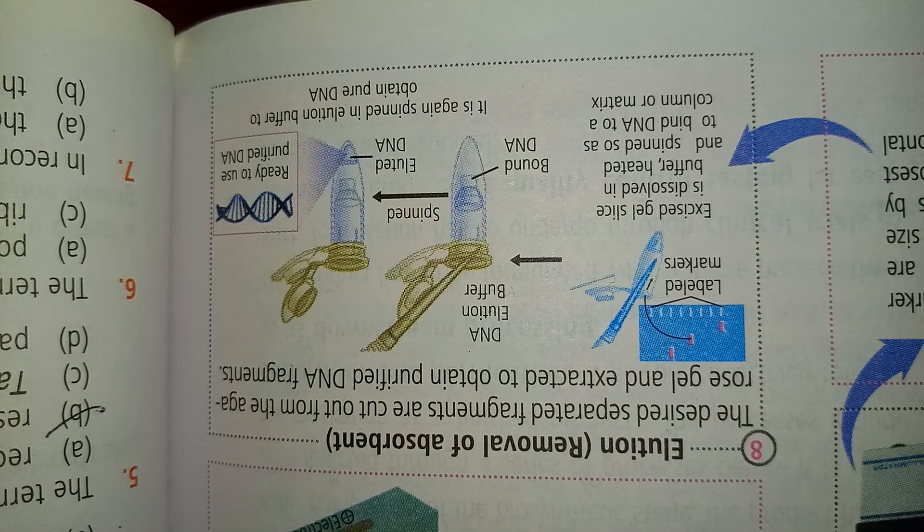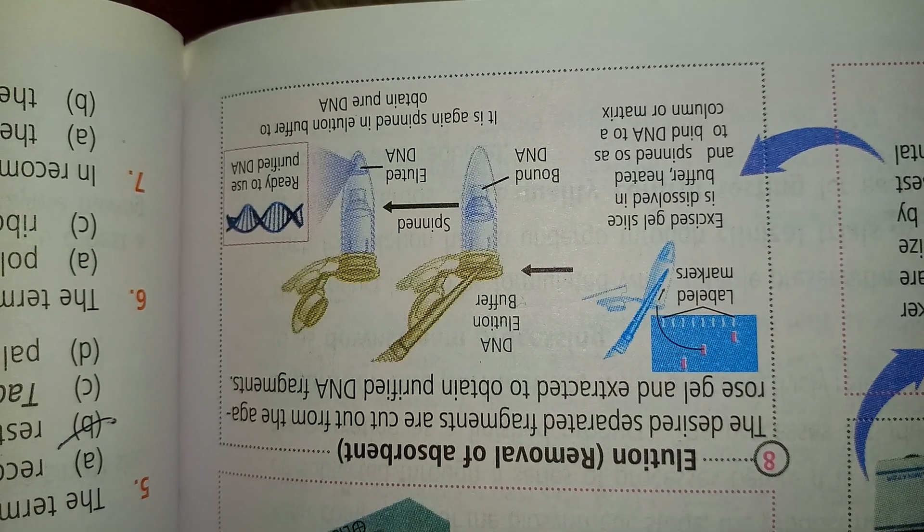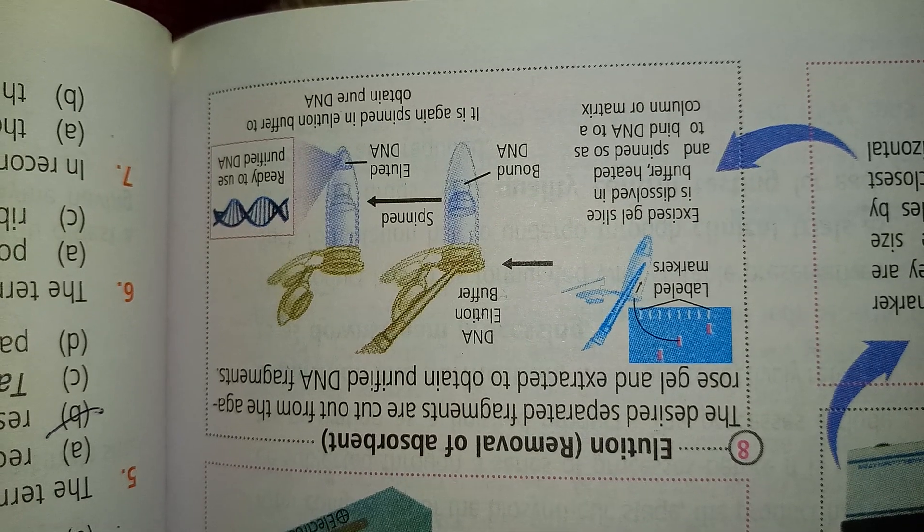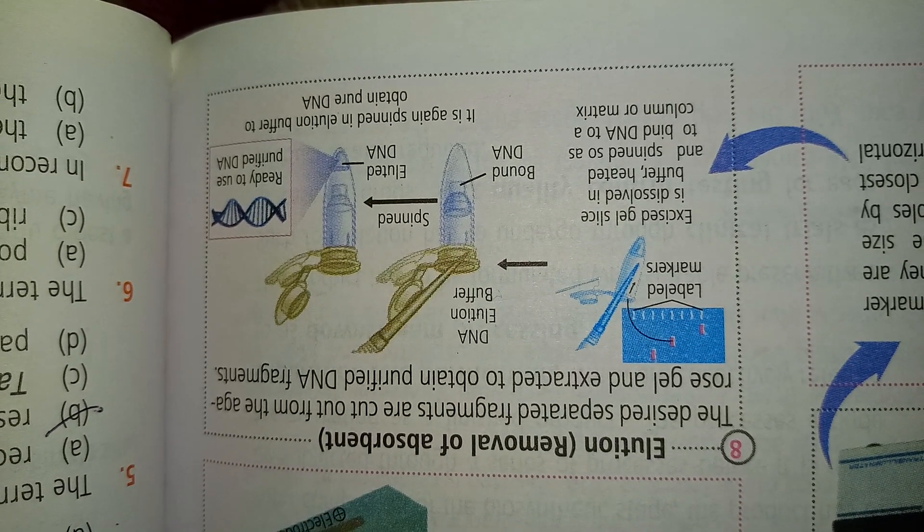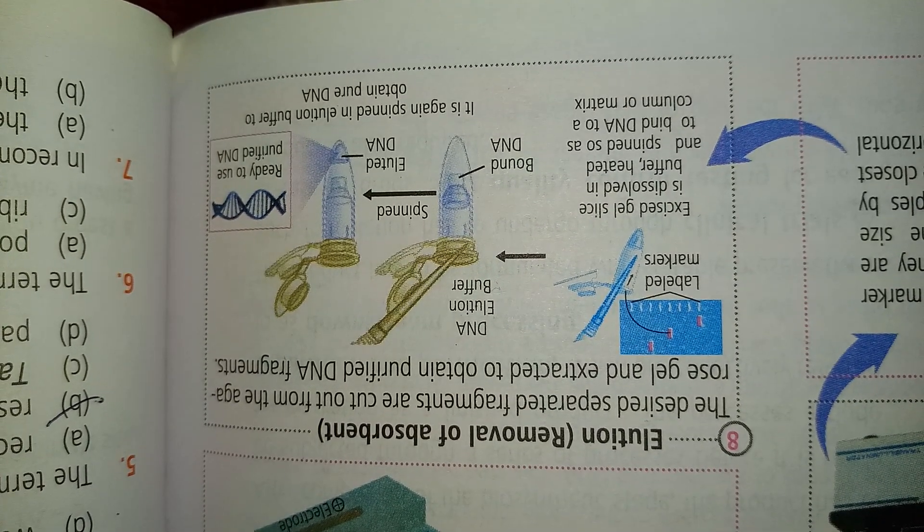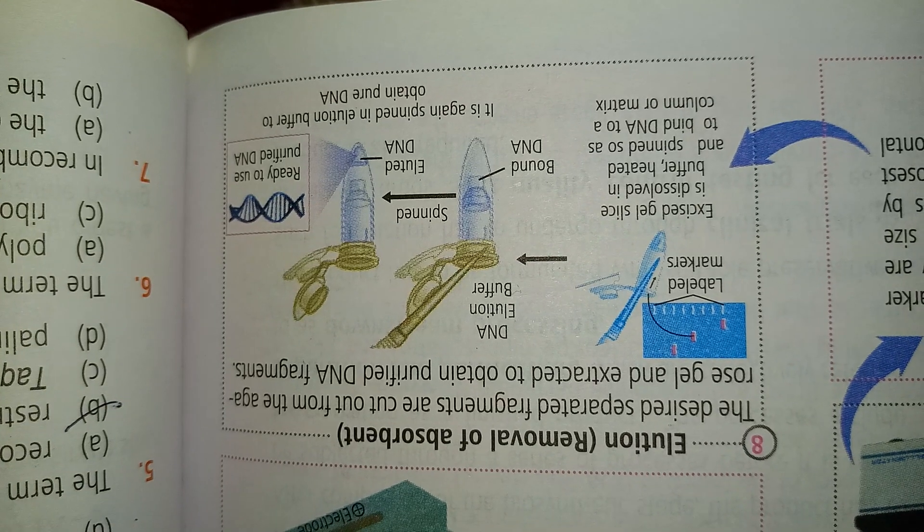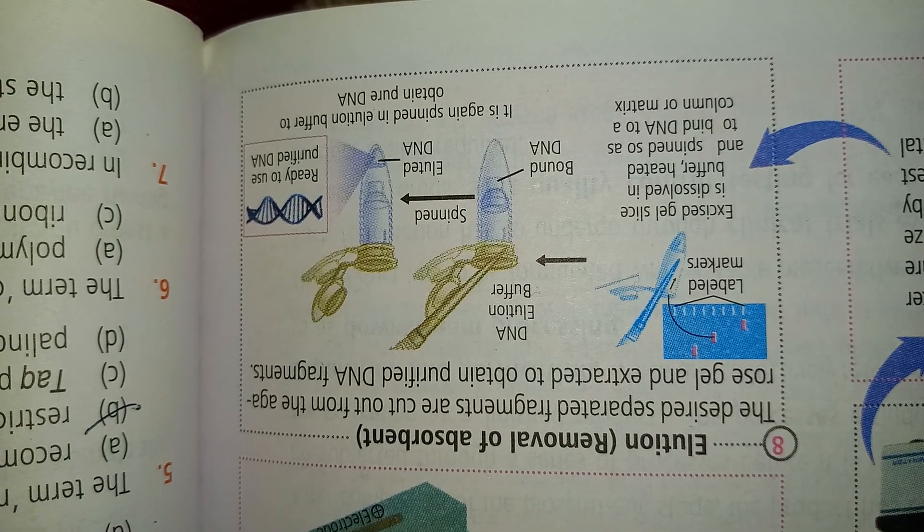Labeled gel slices are dissolved in the buffer and heated and spun so as to bind DNA to the column matrix.